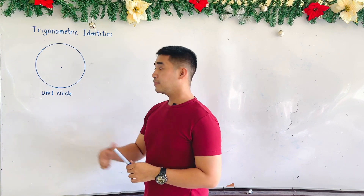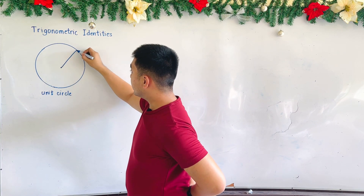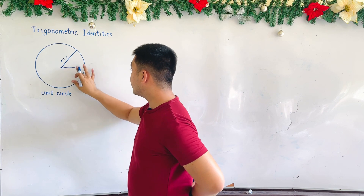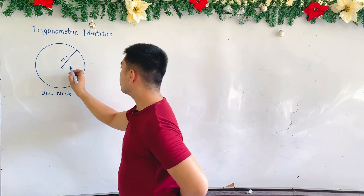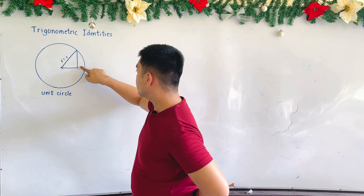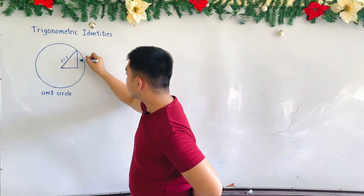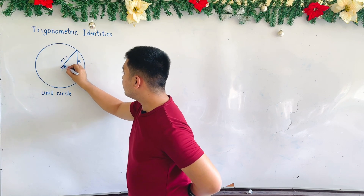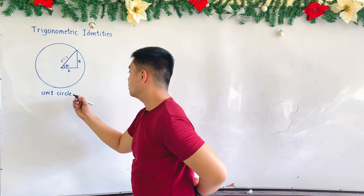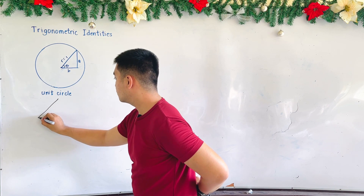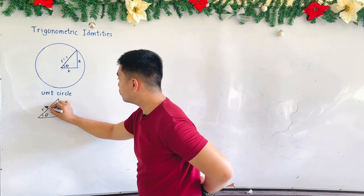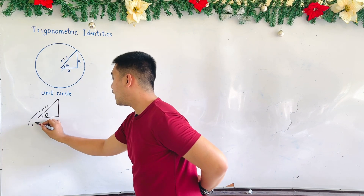This is our unit circle. Always remember that the radius of a unit circle is always equal to 1. If we have a right triangle here and draw a line, based from this triangle, let's say this is side A, this is side B, and this is our angle theta. This is the radius, which is equal to 1, and we will also be calling this as the hypotenuse.